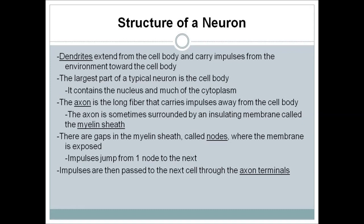The axon is the long fiber that carries impulses away from the cell body. The axon is sometimes surrounded by an insulating membrane called the myelin sheath. There are gaps in the myelin sheath called nodes where the membrane is exposed, and impulses jump from one node to the next. Impulses are then passed to the next cell through the axon terminals.